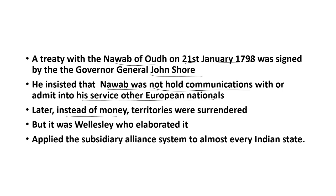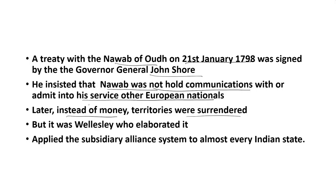Later, certain changes were introduced in the subsidiary alliance system. Initially, payments were made in cash for the services of the English East India Company. But later, instead of cash payment, territories in full sovereignty began to be surrendered to the British. These were the initial attempts towards the introduction of subsidiary alliance in Indian states. But Lord Wellesley elaborated upon and began to extensively use the subsidiary alliance for increasing the dominions of the English East India Company.